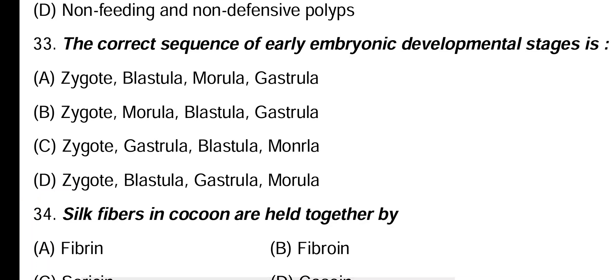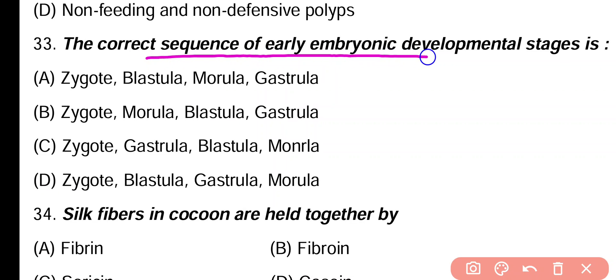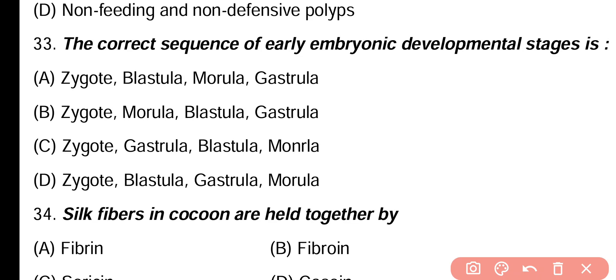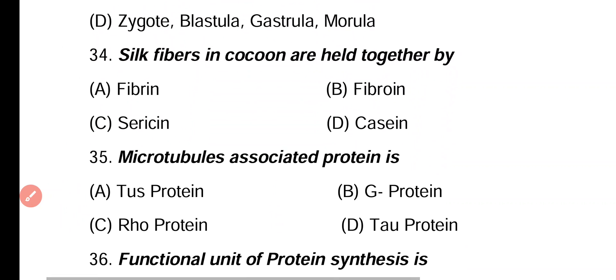Question 33. The correct sequence of early embryonic developmental stages is: zygote, blastula, morula, gastrula; zygote, morula, blastula, gastrula; zygote, then gastrula, blastula and morula; zygote, blastula, gastrula, morula. Correct answer is option B. The correct sequence is: zygote, morula, blastula, then gastrula.